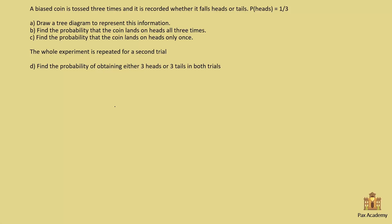A biased coin is tossed three times and it's recorded whether it falls heads or tails, with the probability of heads being one-third. Part A says draw a tree diagram to represent this information.